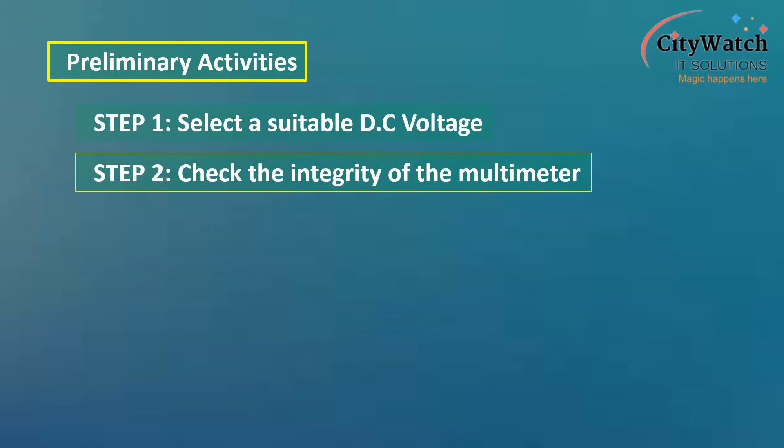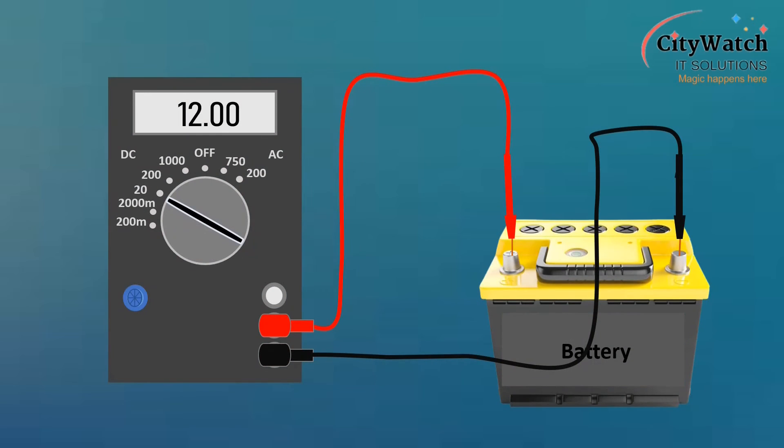Check the integrity of the multimeter by measuring the vehicle battery voltage directly on the battery terminals. Ensure the voltage reading on the multimeter is the correct voltage rating for the vehicle.